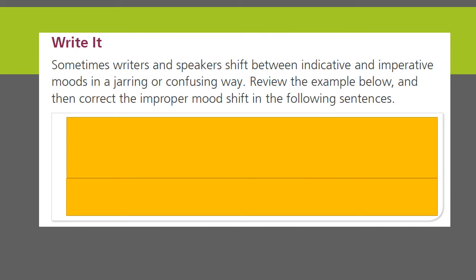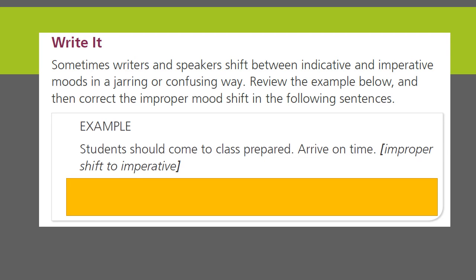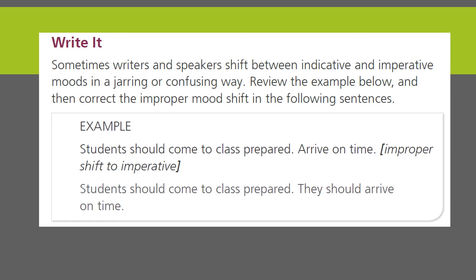Sometimes writers and speakers shift between indicative and imperative moods in jarring and confusing ways. Let's look at the examples below and then correct the improper mood shift in the following sentences. The first part of the sentence is indicative and the second one is imperative — this is a weird switch. The sentence should read: 'Students should come to class prepared. They should arrive on time.'